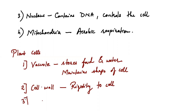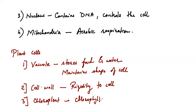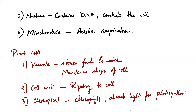The third important plant cell organelle is the chloroplast. Chloroplasts are structures which contain chlorophyll. This chlorophyll is going to absorb the light which is required for photosynthesis. This is how you can differentiate the plant cell and animal cell on the basis of cell organelles.